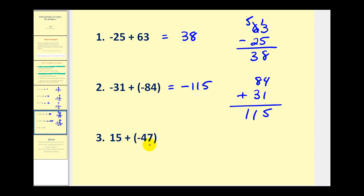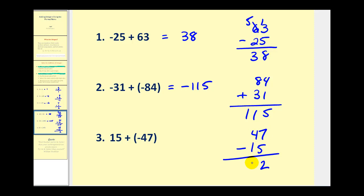And the last example: again we have two integers with different signs, so we'll take their absolute values and then subtract. The absolute value of fifteen is fifteen, and the absolute value of negative forty-seven is forty-seven. Notice I always get in the habit of writing the larger number first, just in case we have to subtract, like we do here because they have different signs. Seven minus five is two, four minus one is three. So our sum is thirty-two, but since the forty-seven had the larger absolute value and forty-seven is negative, our sum is negative thirty-two.